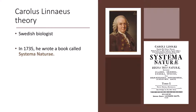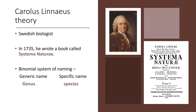He proposed the binomial system of naming an organism. This means the naming of an organism should have two parts. The first part of the name is the generic name and the second part is the specific name. The generic name refers to genus and the specific name refers to species.